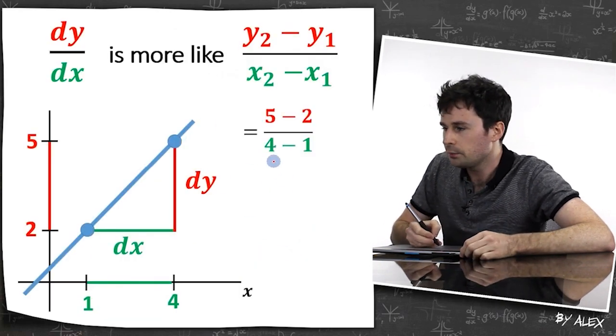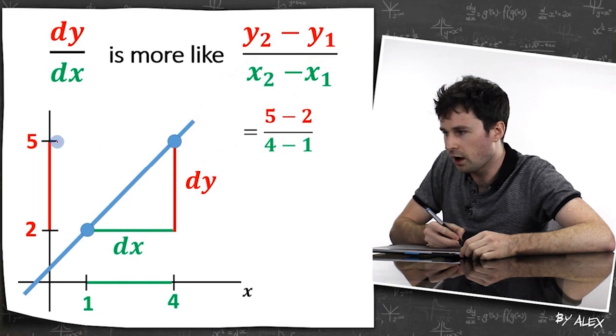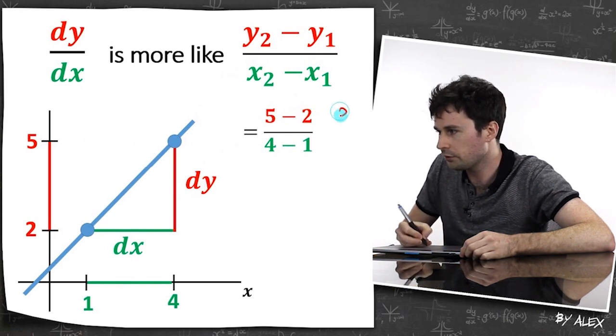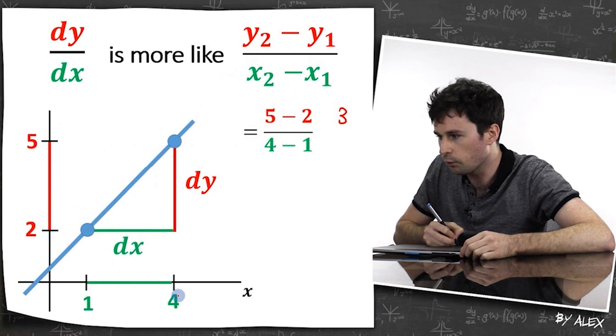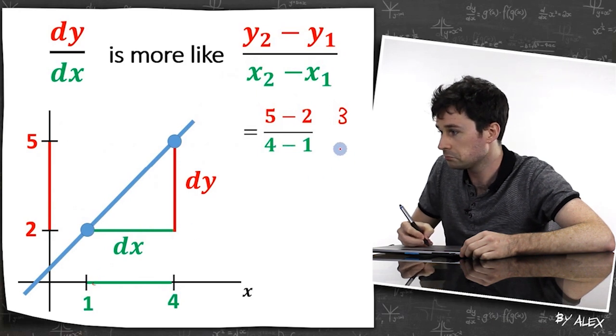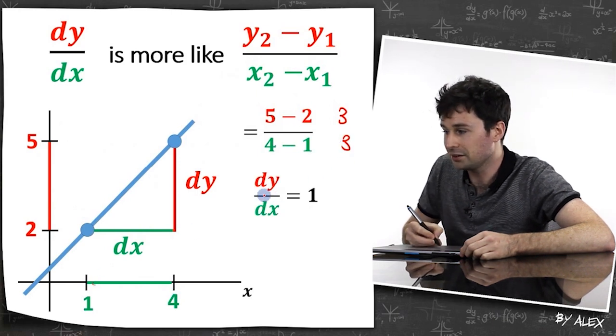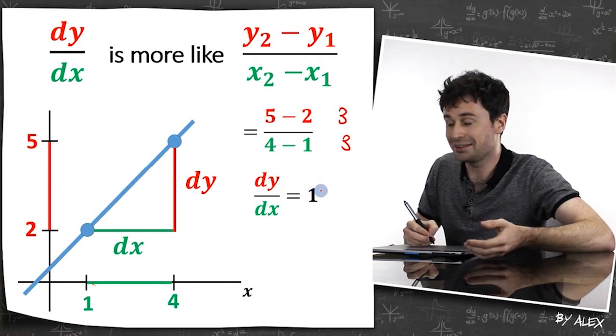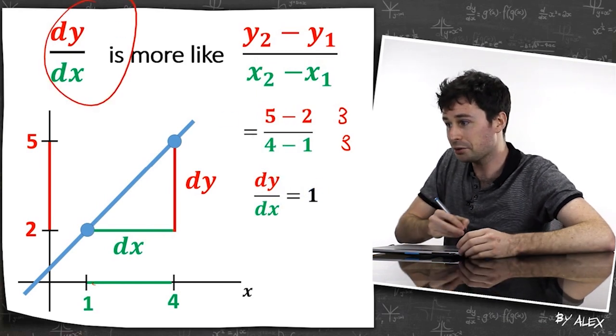So if we look at this, we can see that the difference here would be five minus two, which is three. And the difference here would be four minus one, which is three. So the gradient of this is one. dy/dx is one, and this is essentially gradient.